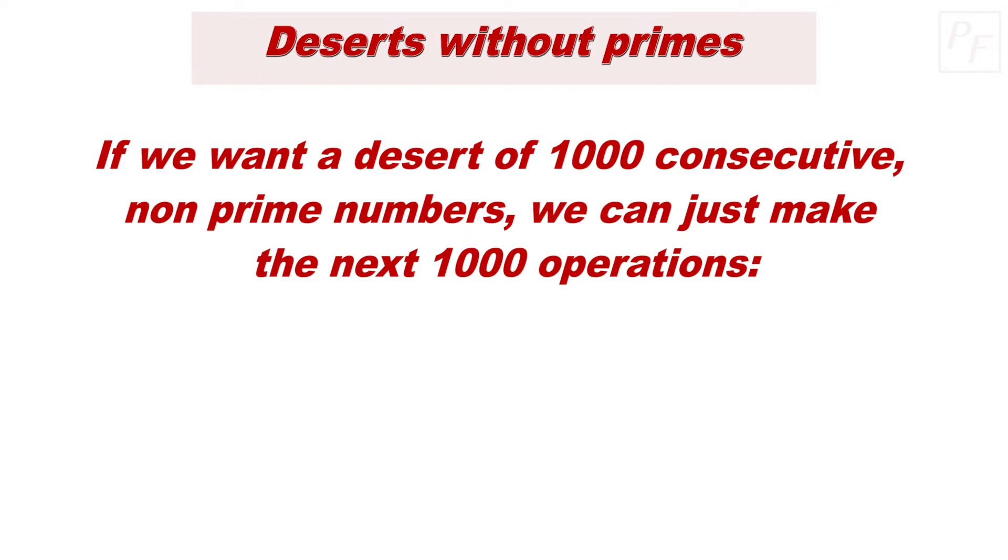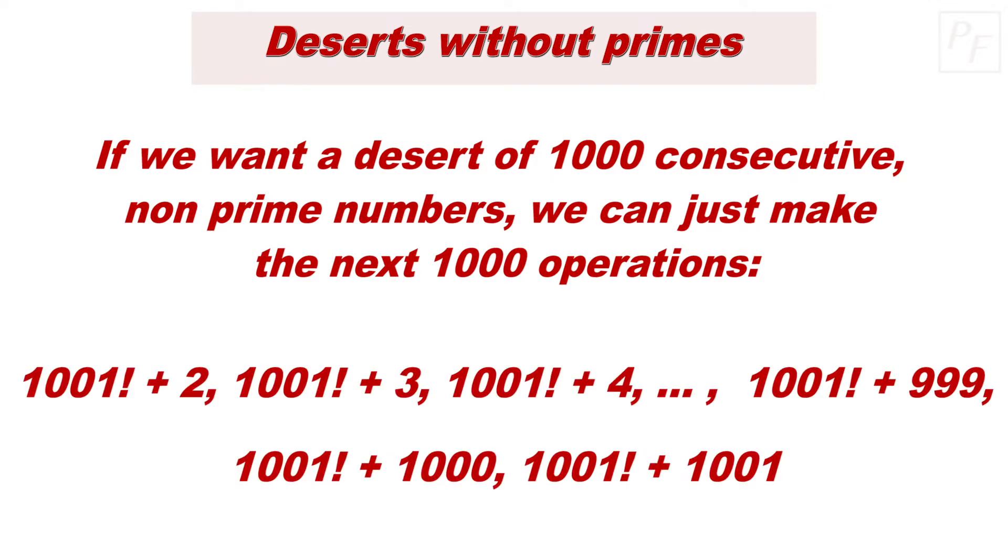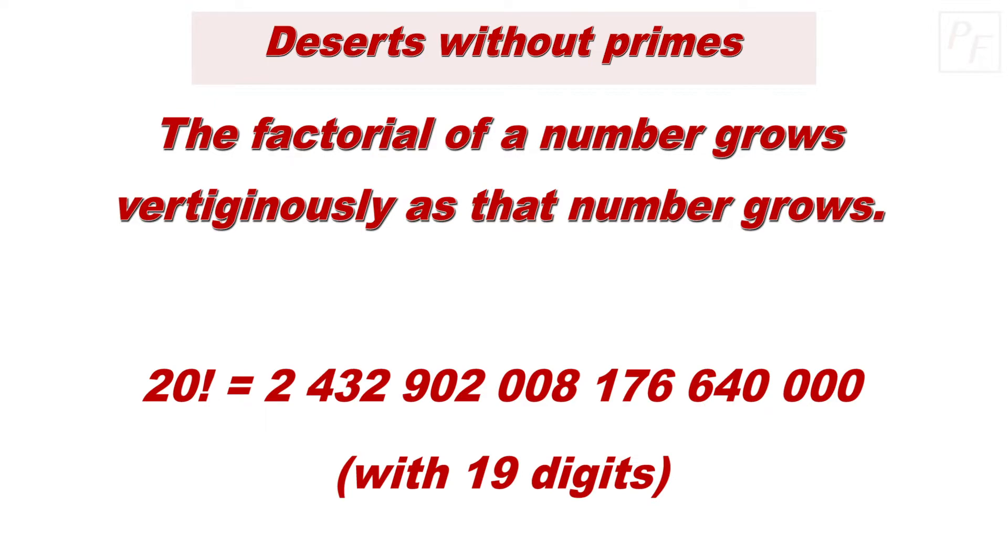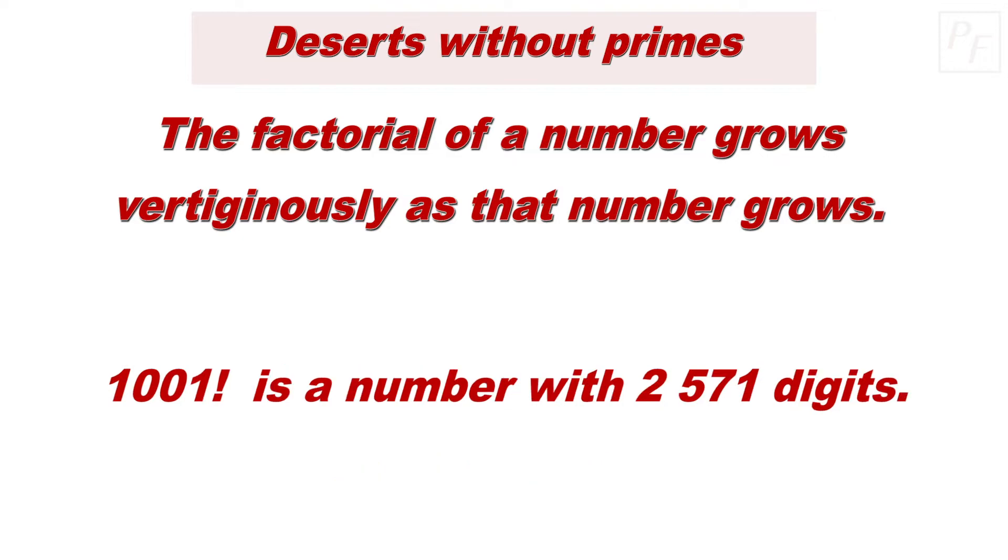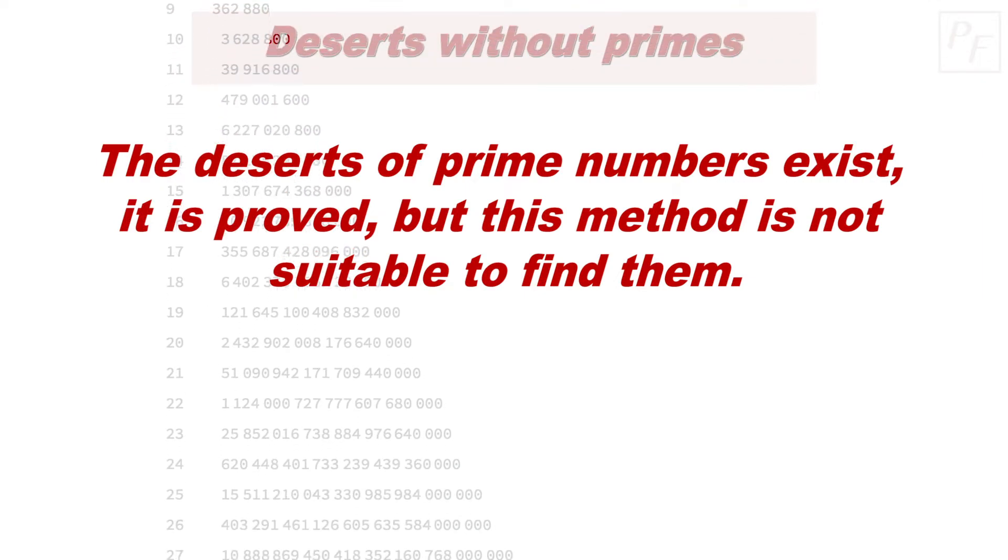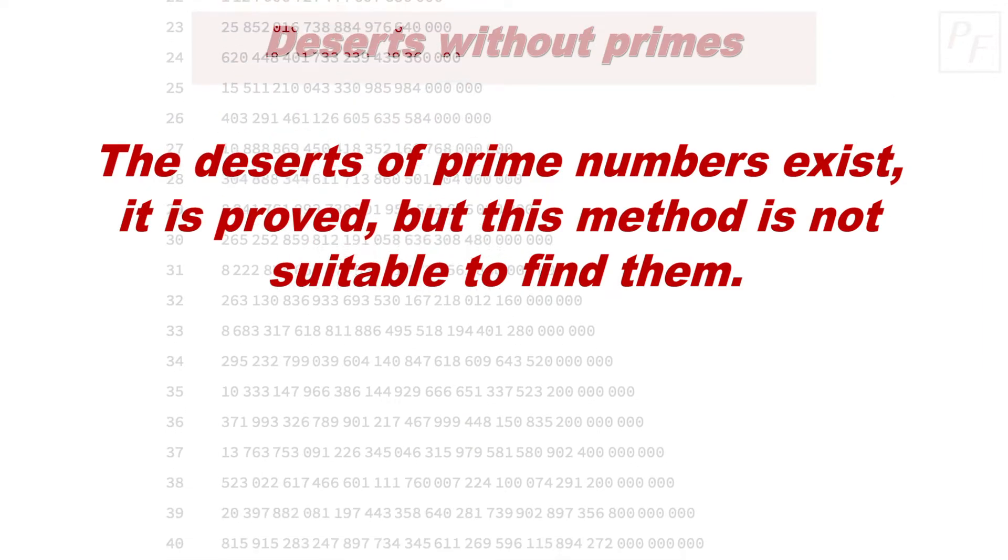For example, if we want a desert of 1,000 consecutive non-prime numbers, just make the next 1,000 operations. But, alas, friends, there is a high price to pay. The factorial operation is treacherous. The factorial of a number grows vertiginously as that number grows. For example, 20 factorial is equal to and has 19 digits. So, what will be the factorial of 1,001? Well, simply an inconceivable number with 2,571 digits. This way of discovering the deserts of prime numbers serves only to understand that they can exist, but it does not help us very much in a practical way.